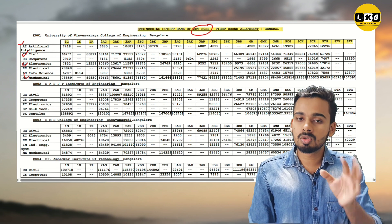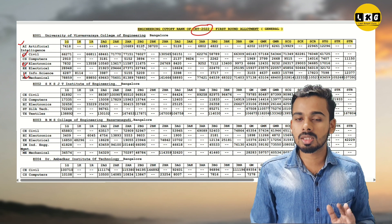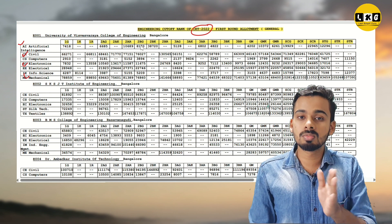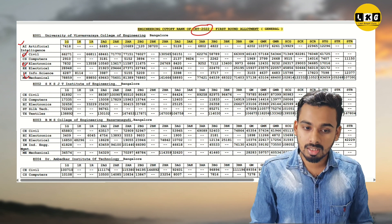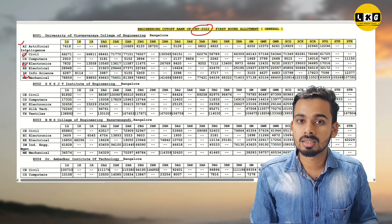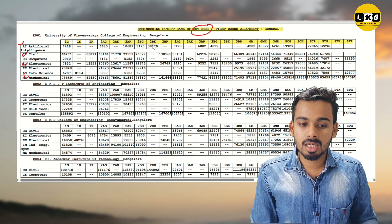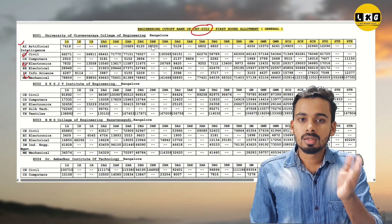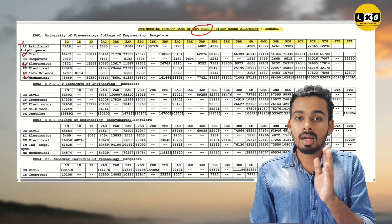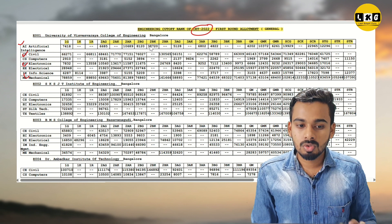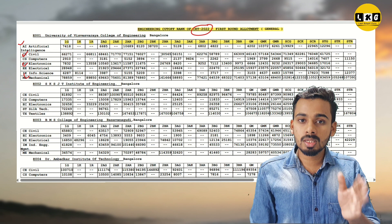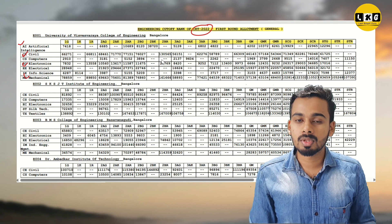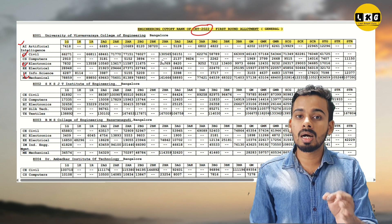Then 2B: 2B category with general is 2BG. Same thing — 2B category with Kannada medium certificate is 2BK. 2B with rural certificate is 2BR. The logic is the same across all categories.